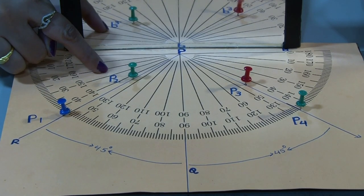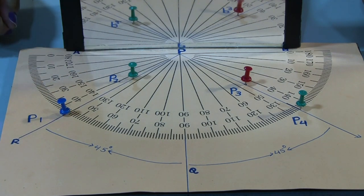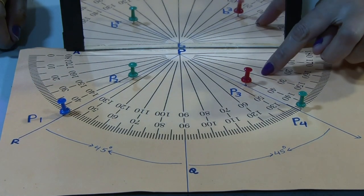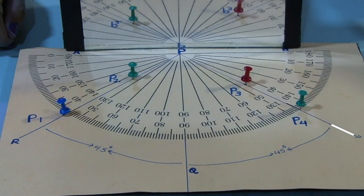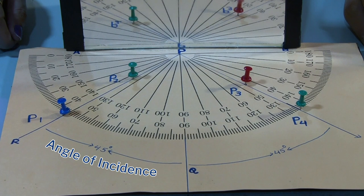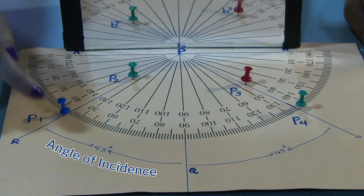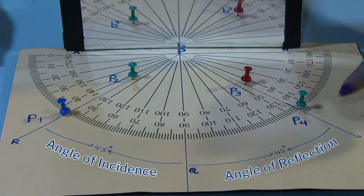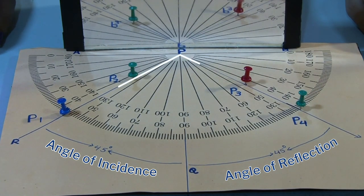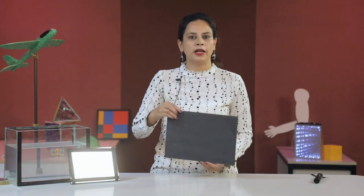The line through P1 and P2 indicates the incident ray, and the line through the other pins indicates the reflected ray. We can clearly see that the angle of incidence is equal to 45 degrees and the angle of reflection is also 45 degrees. Thus, the angle of incidence is equal to the angle of reflection.